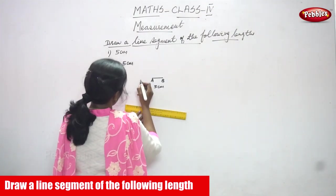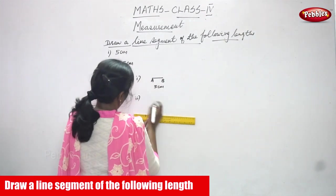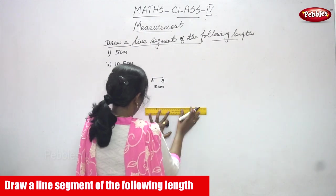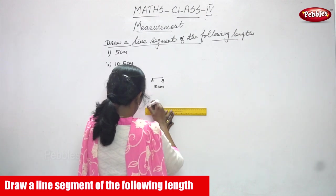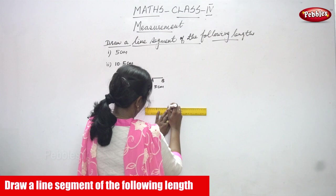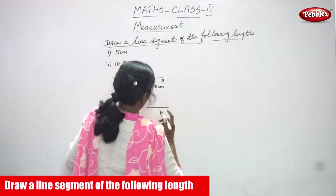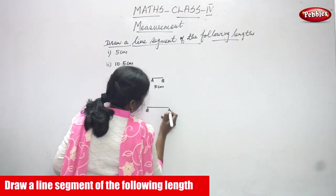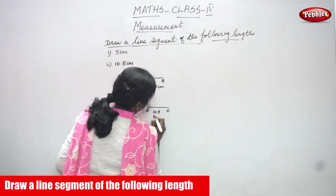If you take a 10.5 cm, first sum is over, another sum, second sum, I am going to draw. It is a 10.5 cm. Take a scale, fold it properly. This is B and 10.5 cm.